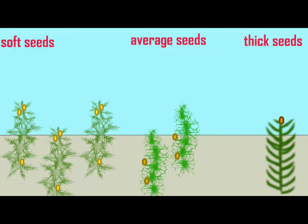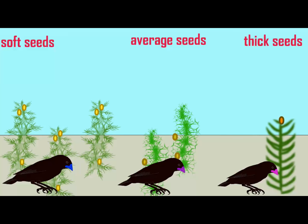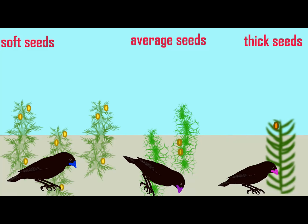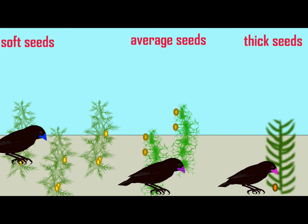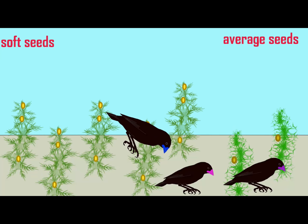Directional selection could also move average beak depth in the opposite direction if, after multiple years of wetter conditions where plants with softer seeds predominate, this favors the finches with narrower beaks. Thus, once again, the average beak depth in the population would change. And this is an example of directional selection.